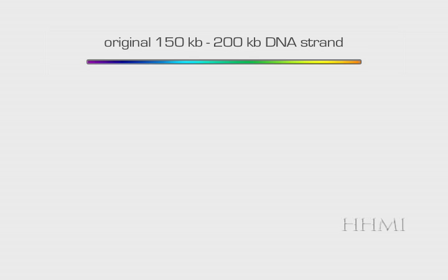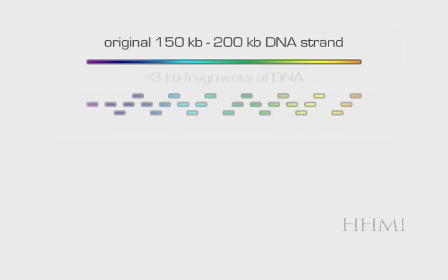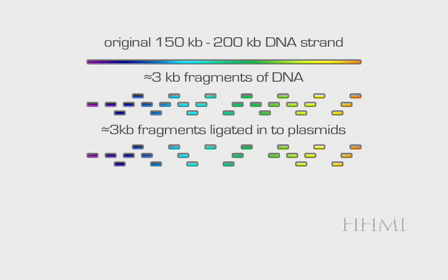We started out with a strand of DNA that was about 150 to 200 kilobases long. We broke that into three kilobase pieces. In that process there were some pieces that were too long or too short, so we lost some genetic information there. We inserted the three kilobase pieces into plasmids, and inevitably some of the pieces were not accepted into a plasmid, so we lost a little information there.